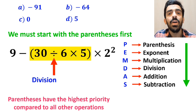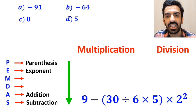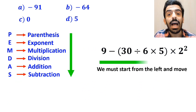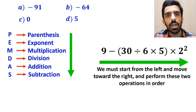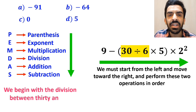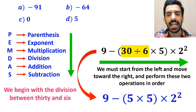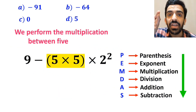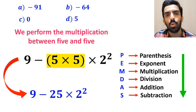Inside the parenthesis, first we have a division sign, and then a multiplication sign. It's very important to remember that multiplication and division have the same level of priority. In this situation, we must start from the left and move toward the right and perform these two operations in order. So we begin with the division between 30 and 6, and this expression simplifies to 9 minus 5 times 5 inside parenthesis, then multiply by 2 squared. In the next step, we perform the multiplication between 5 and 5, and write this expression as 9 minus 25 multiplied by 2 squared.